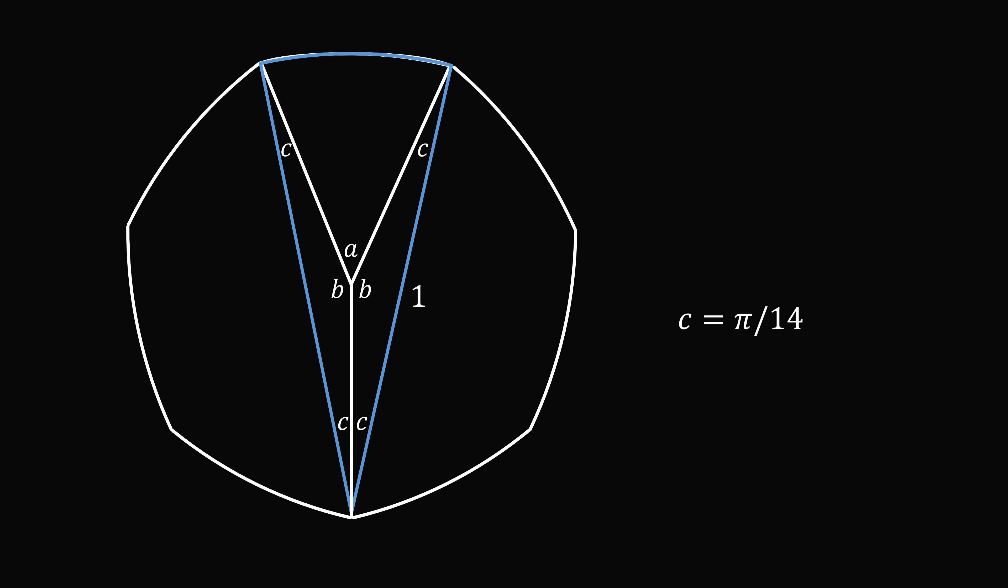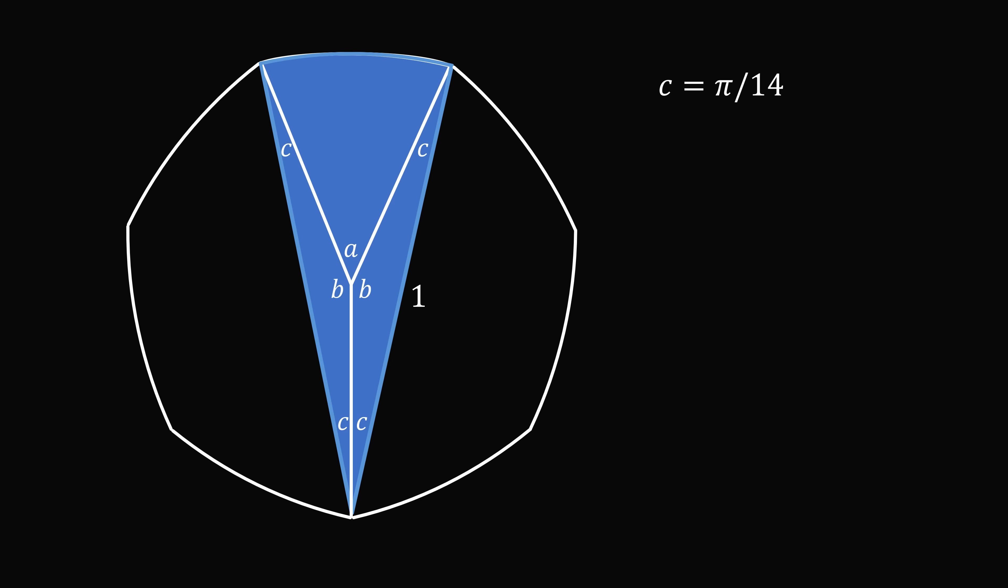So we're now pretty much ready to do the main calculation. We will first calculate the area of this circular sector. The area of a circular sector is R squared over 2 multiplied by theta. In this case, we have R squared multiplied by 2C, the central angle is 2C, and then we divide by 2. Since R is equal to 1 and C is equal to pi over 14, this simplifies to be pi over 14.